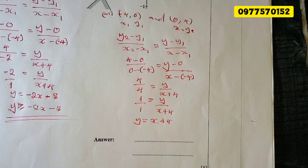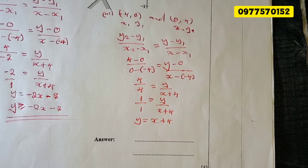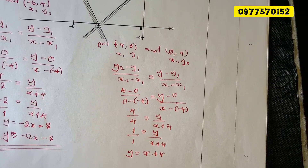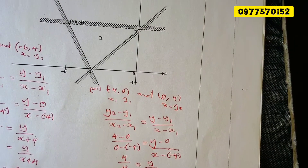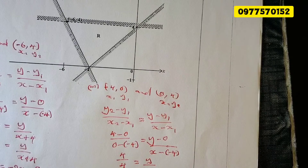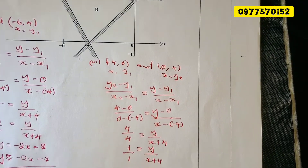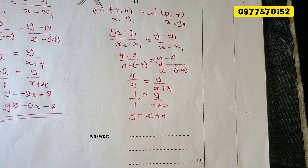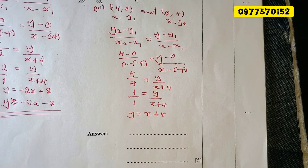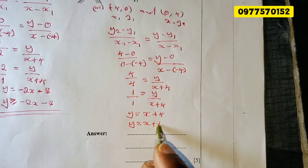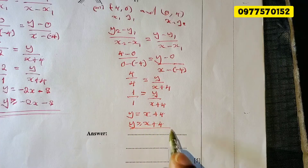We shouldn't leave our answer as an equation — we were asked for inequalities. Check the nature of the line: it's a solid line, so we include 'or equal to.' The shading is on the less-than part, so for the wanted region we use greater than or equal to — it's the opposite side. The third inequality is y ≥ x + 4.